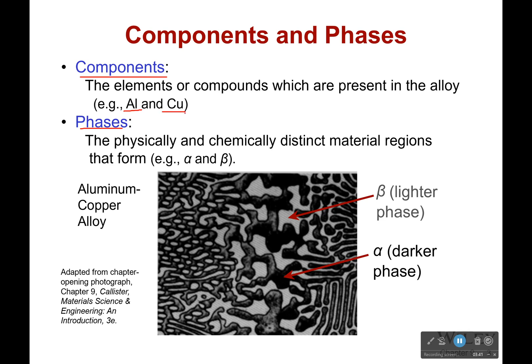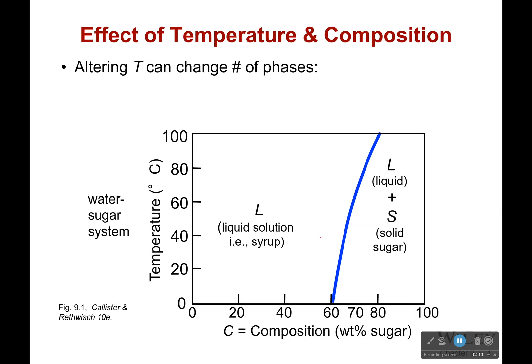It's good to talk about components and phases because the way those different components, which are the different atoms in your metal, are arranged actually changes their properties. Phases are physically and chemically distinct material regions that form, and these are usually marked with a Greek letter like alpha or beta. This is aluminum-copper alloy and the alpha, which is the darker phase in this case, is right here. You can see the lighter phase is the beta. Those are two different compositions, two different microstructures, and two different phases.